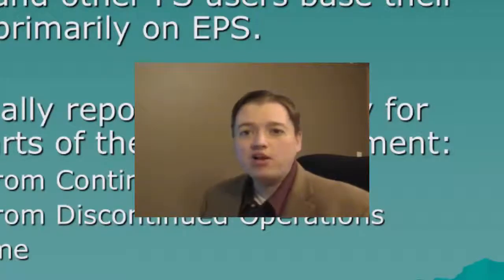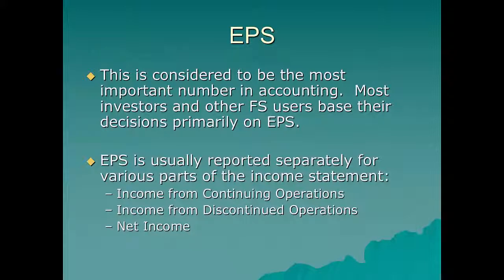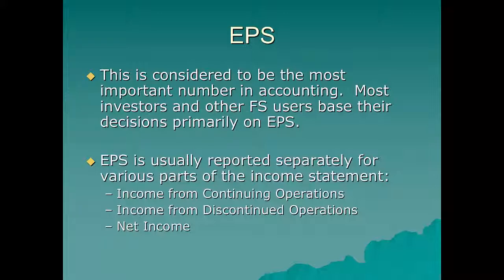We're going to start with perhaps the most important number of all: earnings per share. Most investors consider earnings per share to be the most important number in accounting. That's significant because it shows how important accrual accounting is — all the adjusting entries and calculations we make to create the income number have become super important to investors. Analysts forecast earnings per share, companies announce what they expect, and there's a lot of focus on how the actual number compares to earlier estimates. The downside is that companies may neglect other important financial information, a psychology concept called functional fixation.